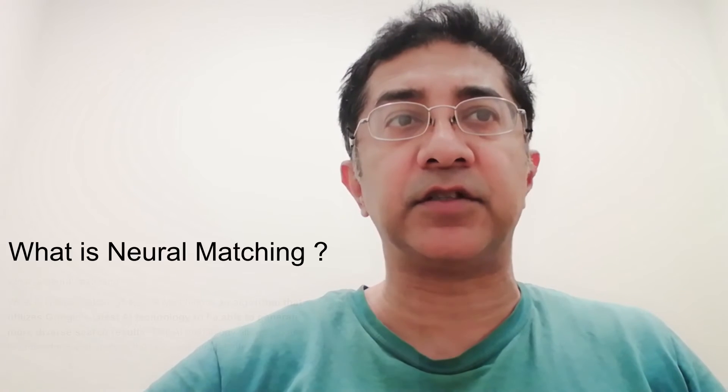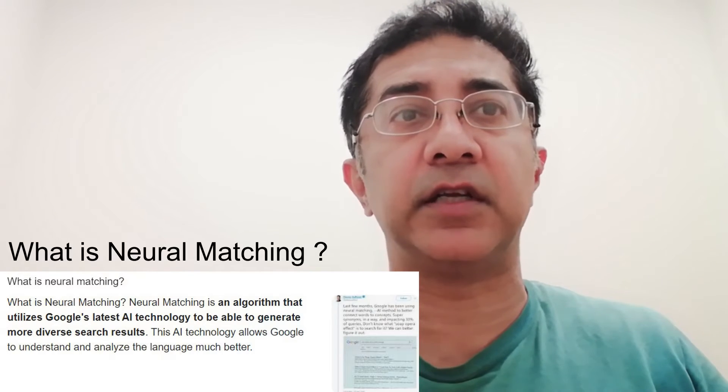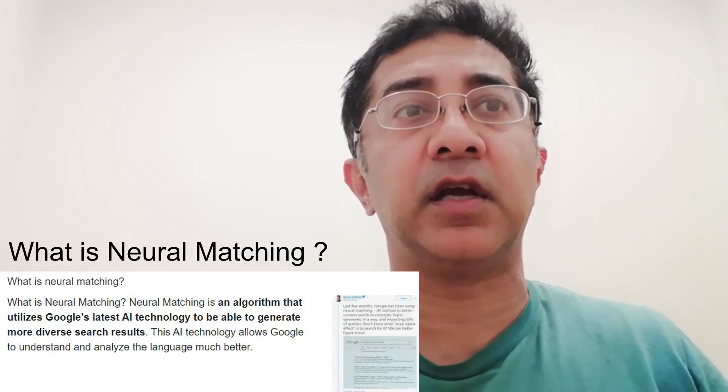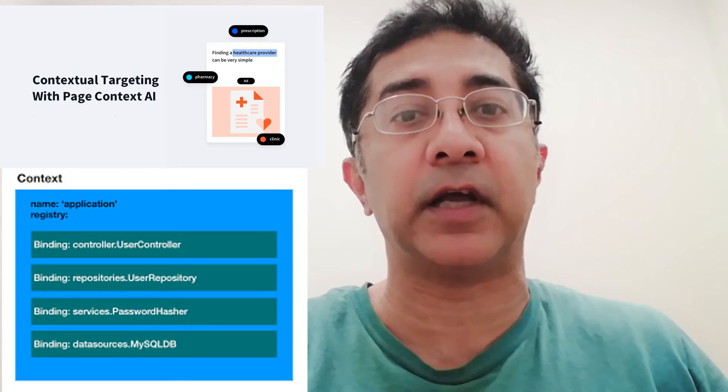Neural matching was the next AI Google released for search. It was released in 2018 and then expanded to local search results in 2019. Google told us neural matching helps Google understand how queries relate to pages by looking at the entire query and content on the page, understanding within the context of that page or query. Today, neural matching is used in many if not most queries for all languages and regions across most verticals of search, and it specifically helps Google rank search results as part of the ranking algorithm.